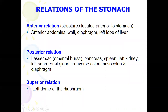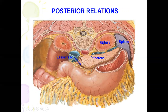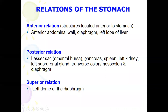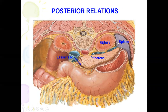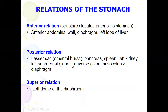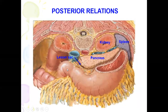For the anterior relations of the stomach, the structures located anteriorly include the anterior abdominal wall, the diaphragm, and the left lobe of the liver. For the posterior relations, we have the omental bursa at the back of the stomach, the pancreas, the spleen, and the left kidney.